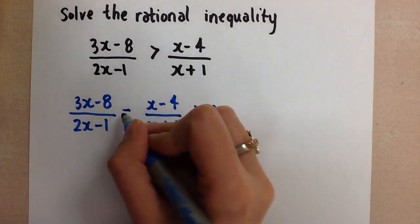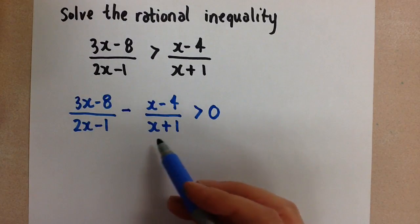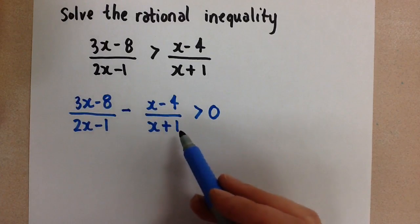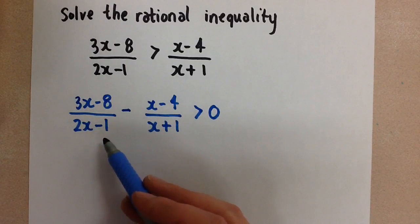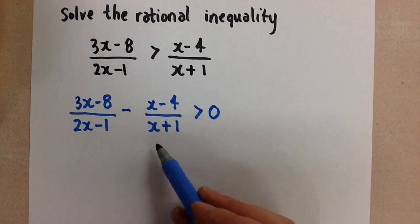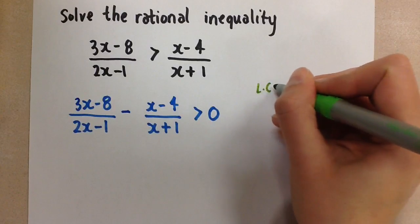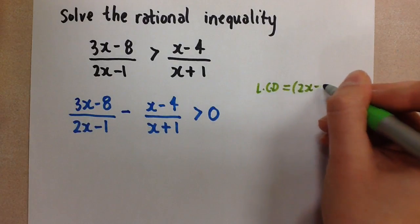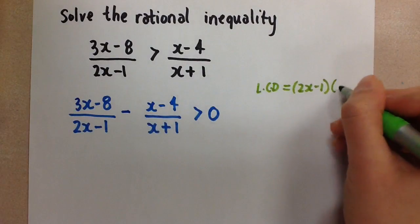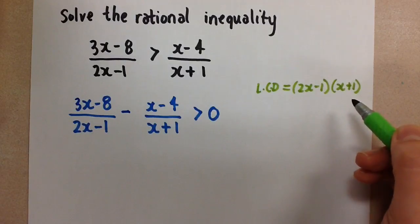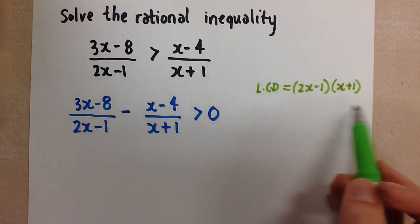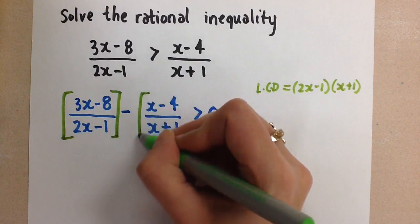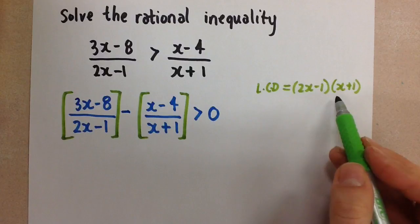Now we have these two rational expressions being subtracted. We want to simplify this so that we end up with one rational expression — that means a polynomial divided by a polynomial. We can only combine these by subtracting them, and we do that by getting a common denominator. So we want to look for the lowest common denominator. Our LCD: we need a (2x − 1) from the first denominator and an (x + 1) from the second denominator, so that is our lowest common denominator.